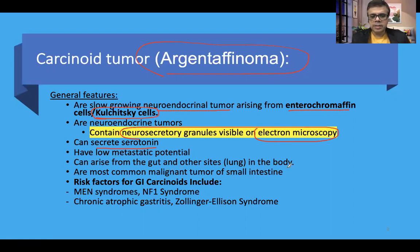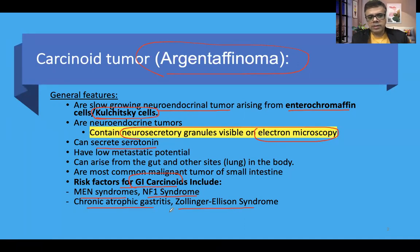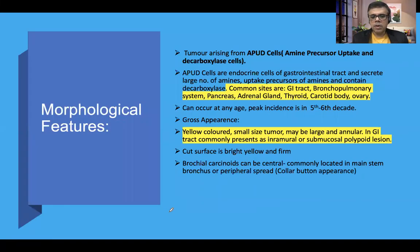Carcinoid tumors can arise from the gut and other sites. Common sites include the GI tract and the lungs. They are regarded as the most common malignant tumor of the small intestine. For GI carcinoids, which are the most common carcinoids overall, important risk factors include multiple endocrine neoplasia syndrome, neurofibromatosis type 1, and conditions that alter gastric acid secretion, such as chronic atrophic gastritis and Zollinger-Ellison syndrome.